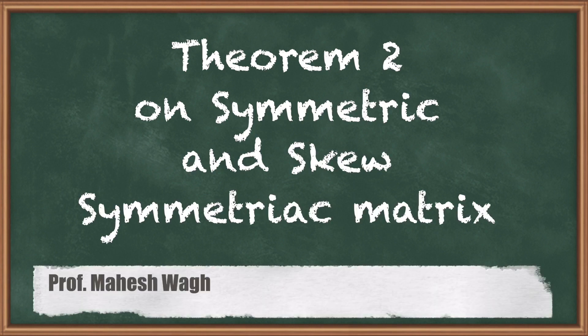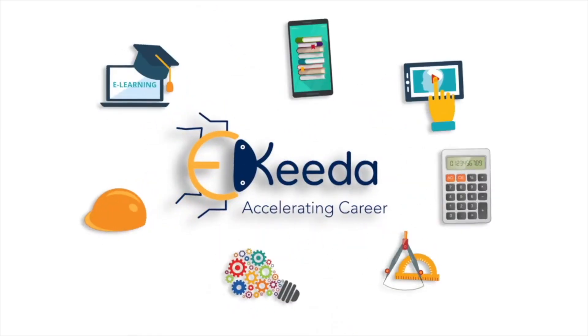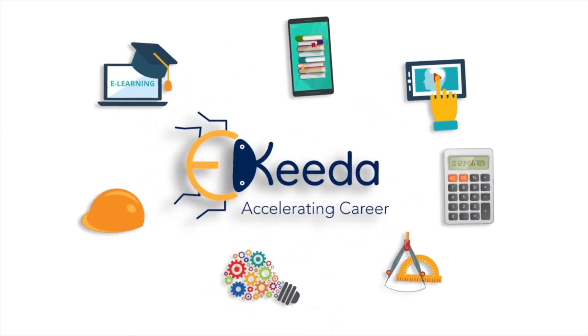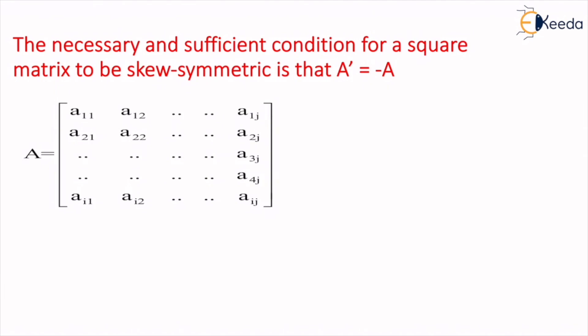Hello friends. Now let's solve the theorem which is based on skew symmetric matrix. The statement is: the necessary and sufficient condition for a square matrix to be skew symmetric is that A dash is equal to negative A. To prove this theorem, I will consider any random matrix A as a square skew symmetric matrix.